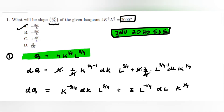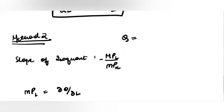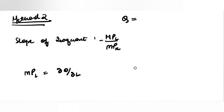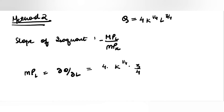The production function is q equal to 4k to the power 1 by 4, l to the power 3 by 4. Differentiating with respect to l, k is a constant, so we get 4k to the power 1 by 4 times 3 by 4 times l to the power 3 by 4 minus 1. This is MPL.